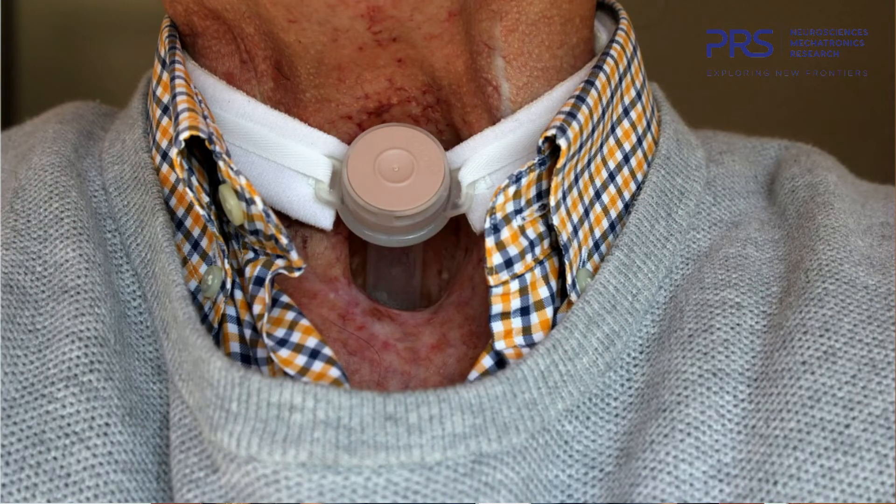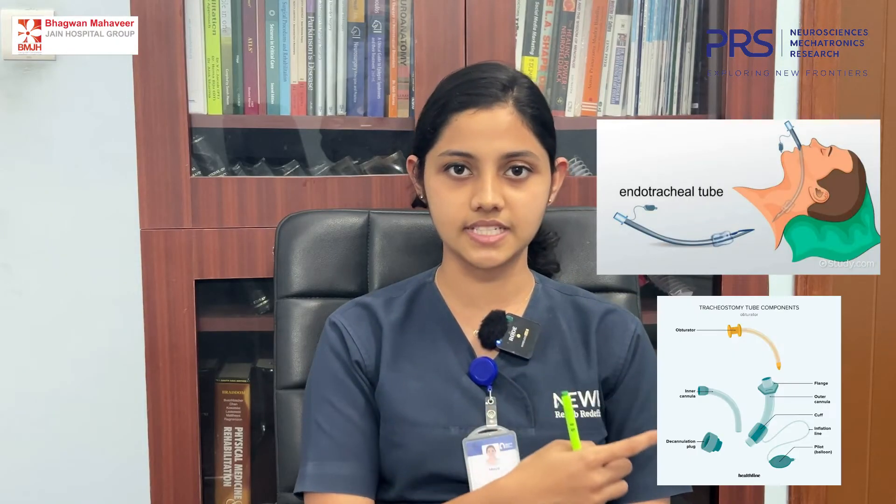In those cases, we will provide ventilator support along with an endotracheal tube. Keeping the endotracheal tube for a long time can cause damage to the vocal folds, and later on it will be a problem for swallowing as well as speaking. So after the ventilator support becomes longer term, we will use a tracheostomy tube, which helps with breathing. On the screen you can see both tubes — this is the endotracheal tube and this is the tracheostomy tube.